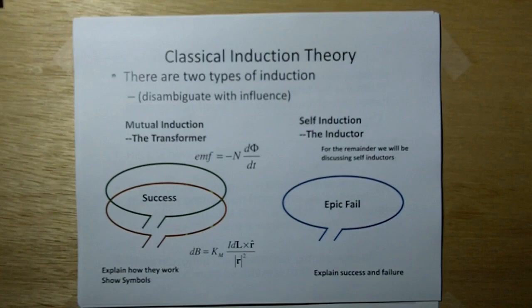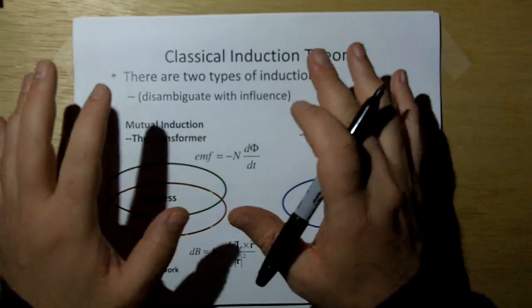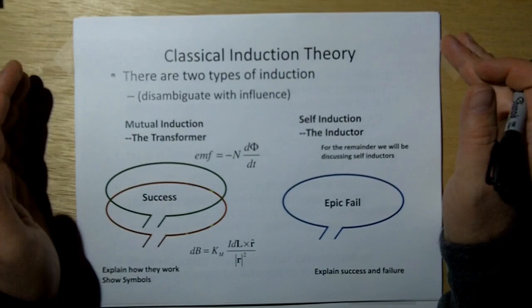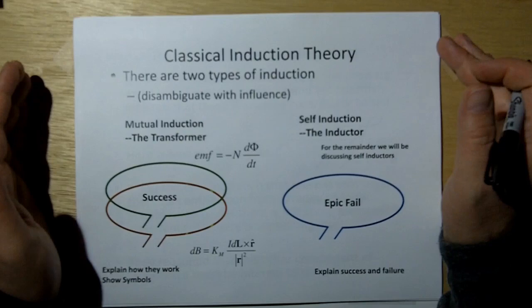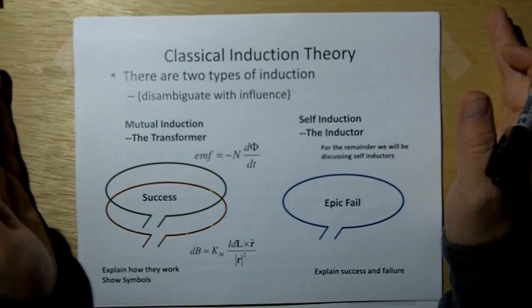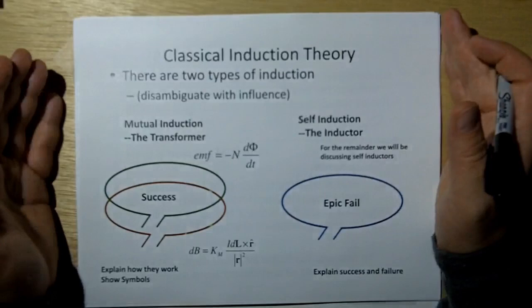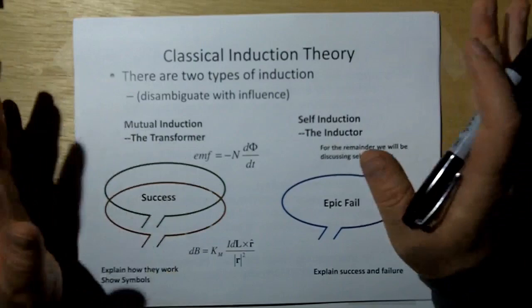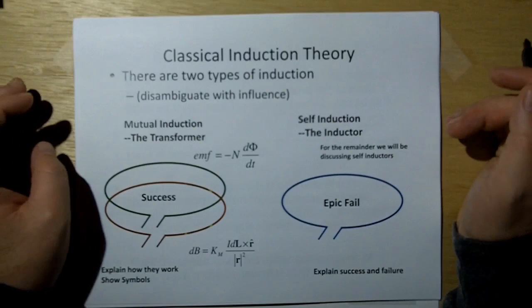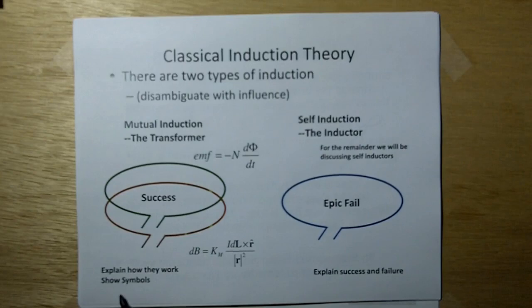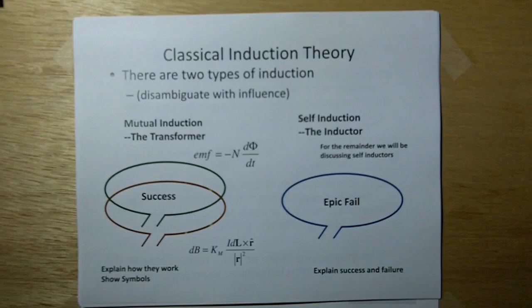What's classical induction theory? There's two types of induction. Let me disambiguate with influence. There's a lot of people inventing electrostatic machines to develop high voltage, and they call those induction machines. The more appropriate term is influence. I just want to make sure people watching realize we're talking about current and magnetism and induced voltage in a coil, which is different than the electrostatic machines you see in some YouTube videos.